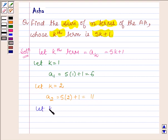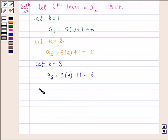Further, let k equal 3. This implies A3 is equal to 5 into 3 plus 1 which is equal to 16. Therefore, the AP series is 6, 11, 16 and so on.